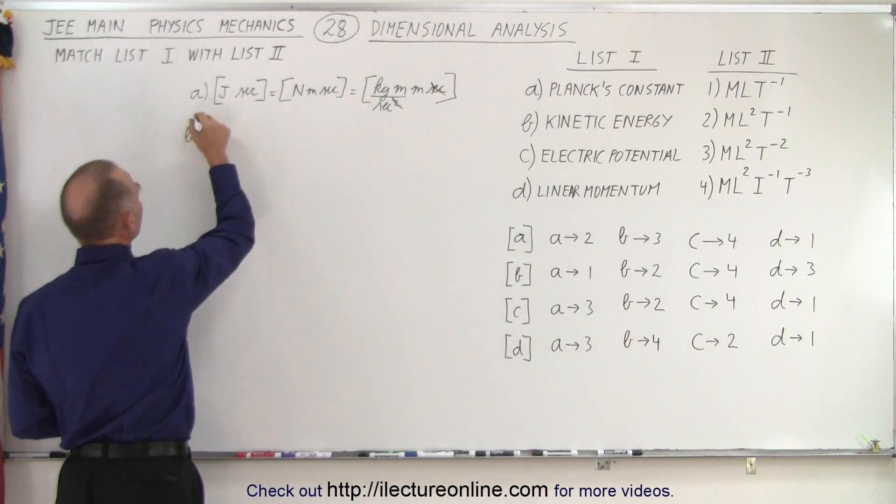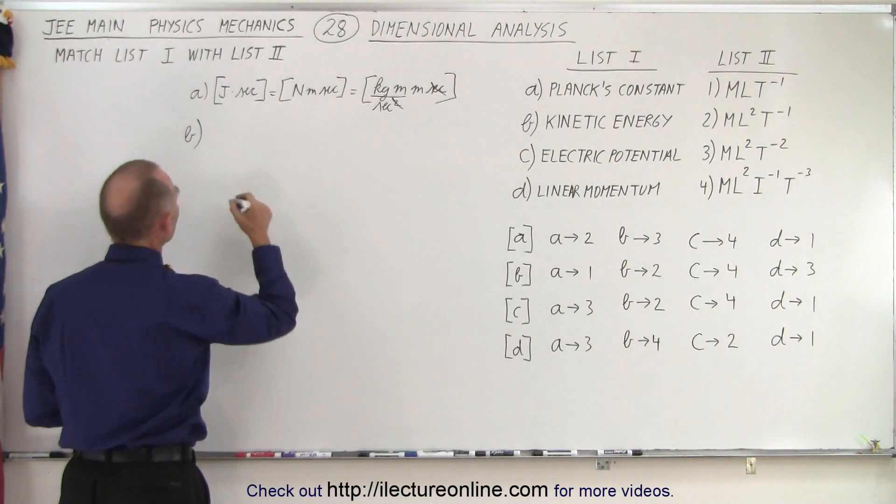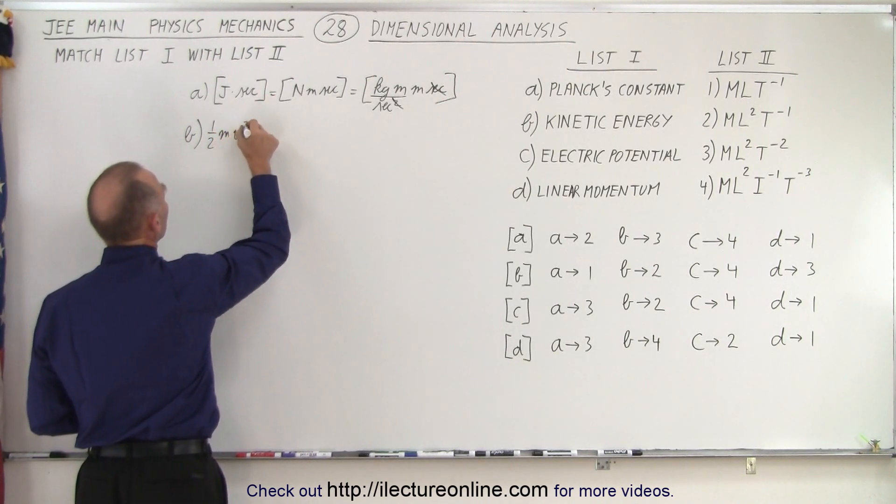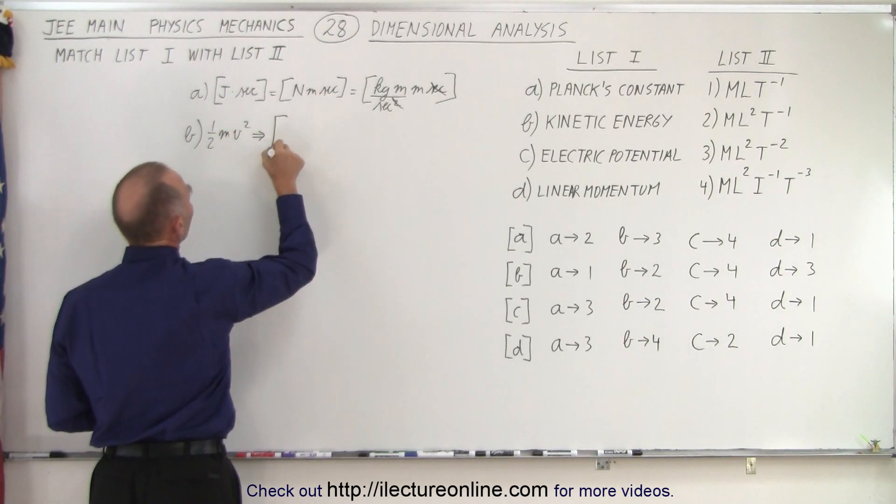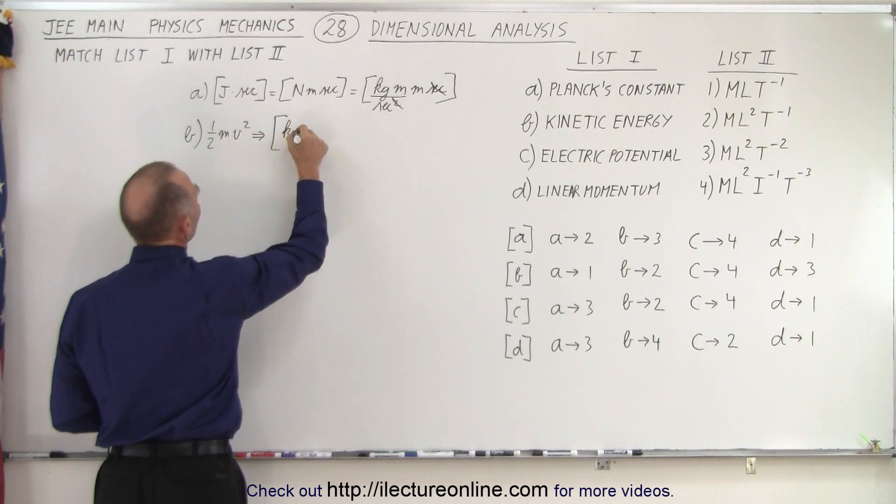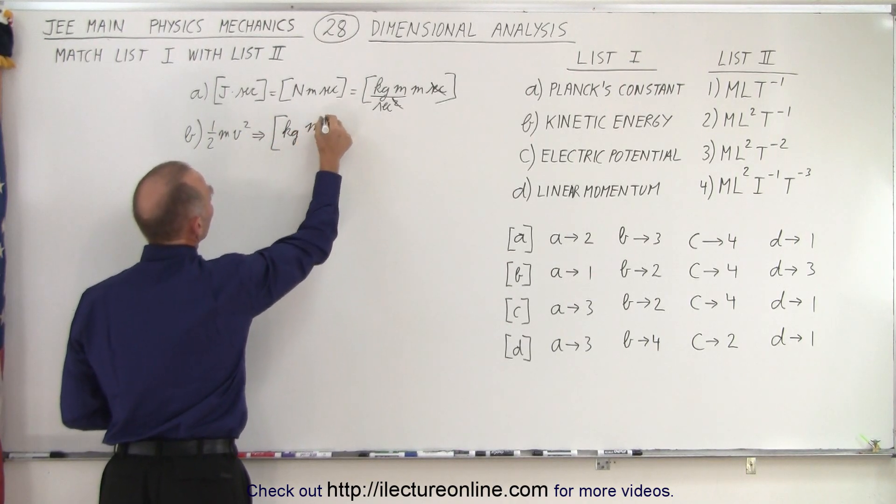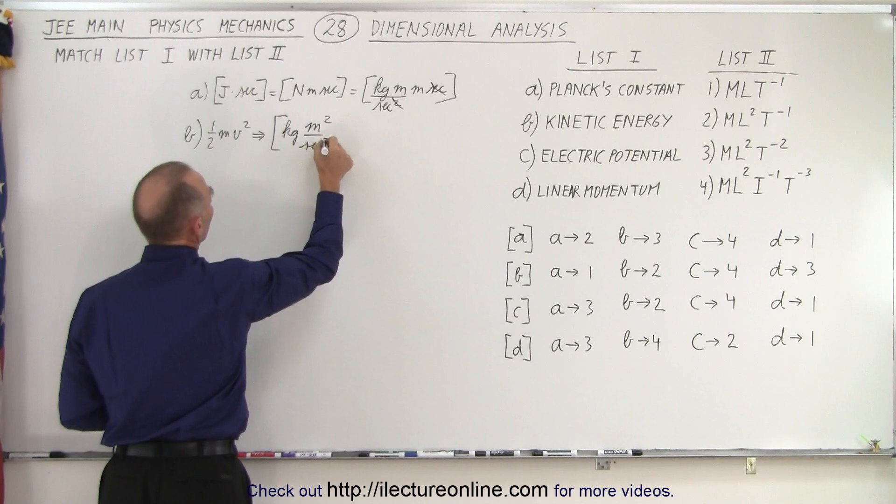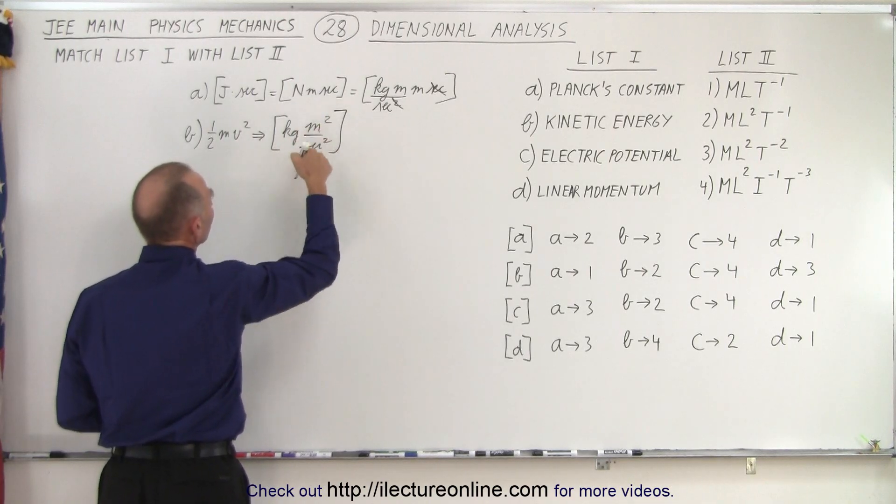For B we have kinetic energy which is one half m V squared, which means that we have mass which is kilograms and velocity which is meters per second, but we have to square it. So we end up with kilograms meters squared per second squared.